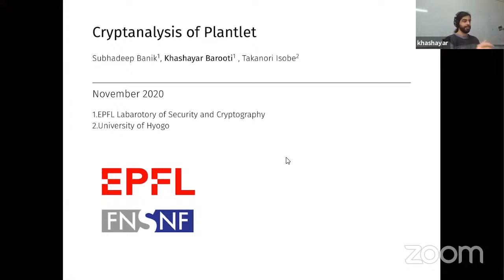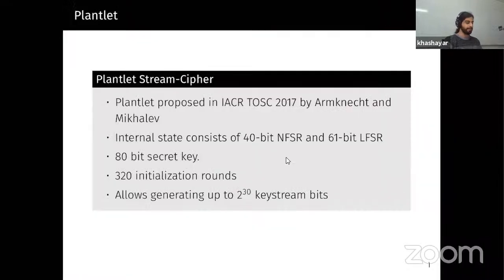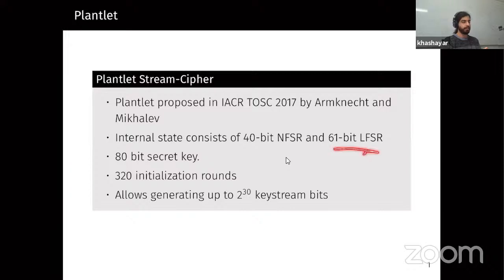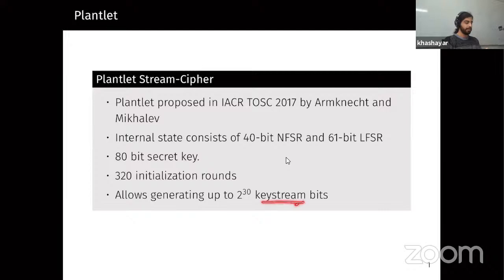Thank you for the introduction. My name is Hossein from EPFL, and today I present our paper on cryptanalysis of Plantlet with Subhadeep Banik and Takanori Isobe. Plantlet is a stream cipher proposed at IACR ToSC 2017 by Armknecht and Mikhalev — the successors of Sprout. It has a grain-like structure with a 40-bit NFSR and a 61-bit LFSR, an 80-bit secret key, 320 initialization rounds, and a limit of at most 2^{30} keystream bits per key-IV pair.